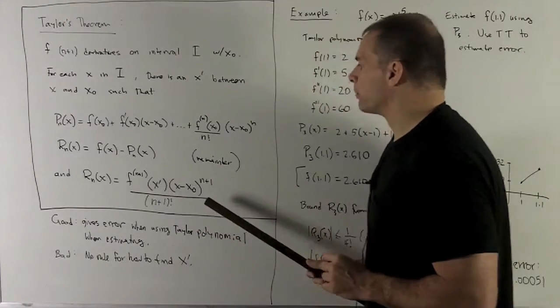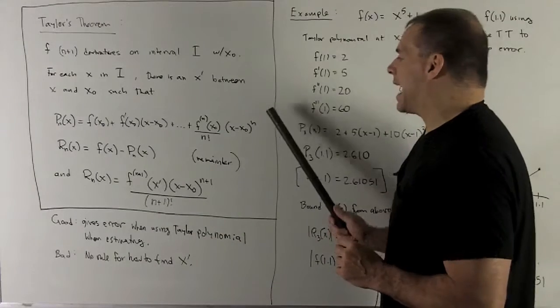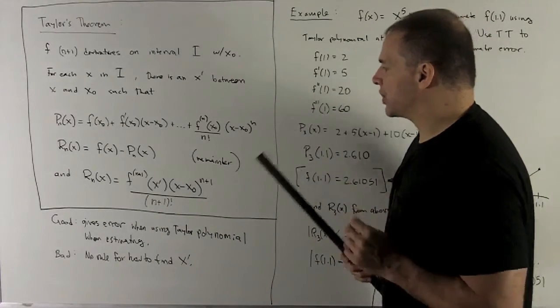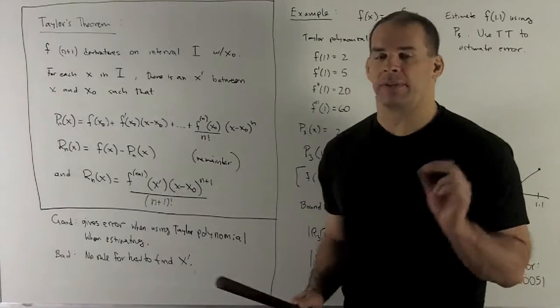The point of this is going to be, the remainder is looking a lot like it should be the next term in the Taylor polynomial. The only difference is going to be, we're going to be evaluating at some different point x'.